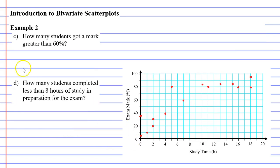We've got some more questions to look at. Question C says, how many students got a mark greater than 60%? If we look at where 60% is, this is the point here. It's everyone that's got a mark greater than that, or above this line. We've got one mark which is exactly 60%, but not greater than 60%. So we've got 1, 2, 3, 4, 5, 6, 7, 8 students that got greater than 60%.